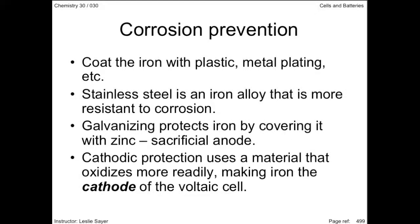Cathodic protection involves connecting the iron with a conducting wire to a stronger reducing agent, say a magnesium metal block. The block of magnesium acts as a sacrificial anode, which is periodically replaced as it is slowly destroyed by oxidation. Gasoline storage tanks, hulls of ships, and underground iron pipes all need cathodic protection and are attached to sacrificial anodes.